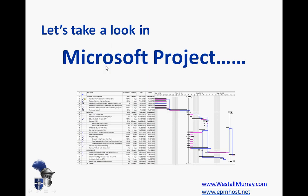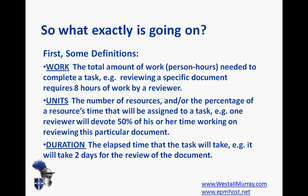So let's go back to our slideshow and consider three terms that Project uses. First, work — Project means the total amount of person hours needed to complete a task. For example, reviewing a document might require eight hours of work by a reviewer. Units, another Microsoft Project term, refers to either the number of resources or the percentage of a resource's time assigned to a particular task — for example, one reviewer might devote 50% of their time to reviewing a document. And duration is simply the elapsed time from start to finish that the task will take — in this case, two days.